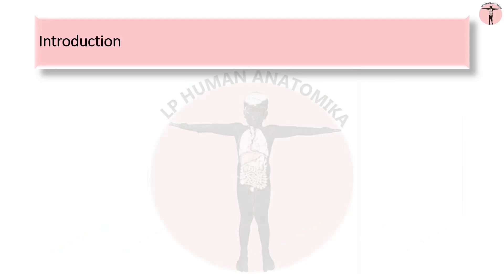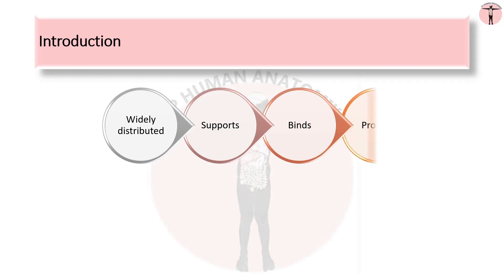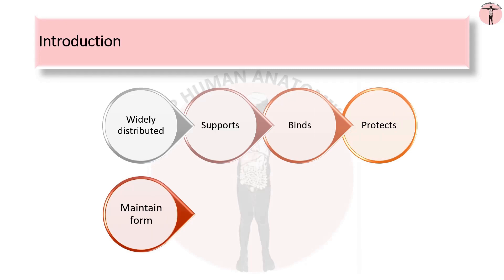Connective tissue is widely distributed throughout the body. It is derived from embryonic mesoderm. It is a general type of tissue which supports, binds and protects the special well-differentiated tissues of the body and maintains the form of organs throughout the body. It provides a matrix that supports and physically connects other tissues and cells together in organs.